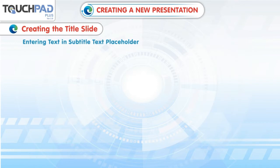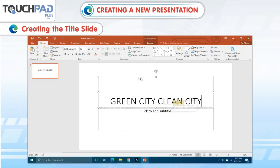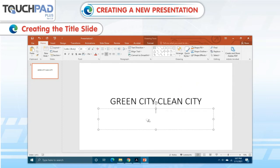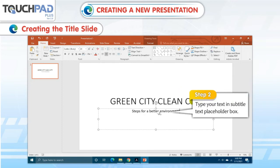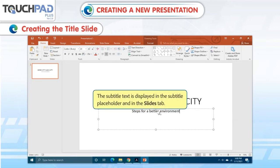Entering text in the subtitle text placeholder. Entering text in the subtitle text placeholder is the next step in creating a title slide. To enter the text in a subtitle text placeholder, follow these steps. Step 1: Click on the subtitle text placeholder box. Step 2: Type your text in the subtitle text placeholder box. The subtitle text is displayed in the subtitle placeholder and in the Slides tab.